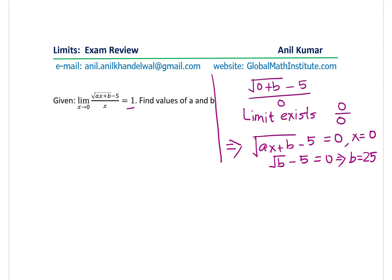Now let's see how to find the value of a. We should actually rationalize as we do normally for any square root functions given in this fashion. So we can write this as square root of ax. We can write b as 25 now since we have found the value, minus 5 over x.